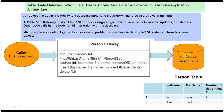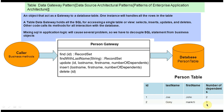We have three components: one is the Caller Business Method, second is the Person Gateway, and third is the Database which contains the PersonTable. The PersonTable has four columns: ID, LastName, FirstName, and Number of Dependents. Currently this PersonTable holds two rows — the first row represents Joe Person's information and the second row represents Cooney Person's information.